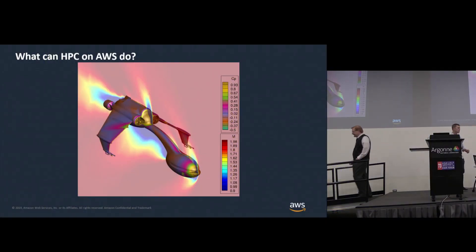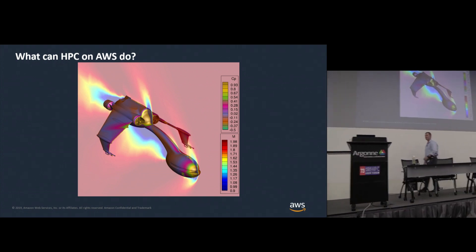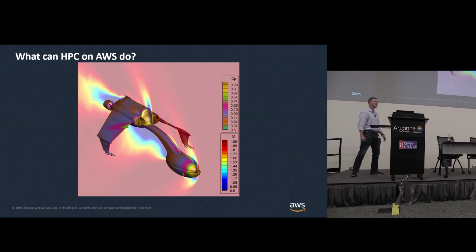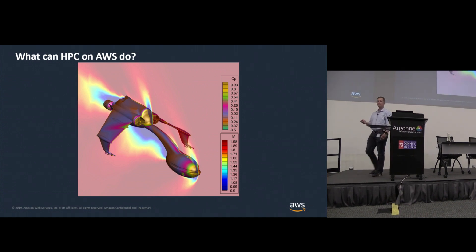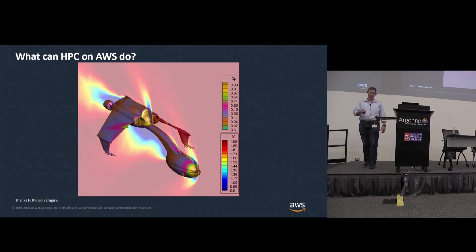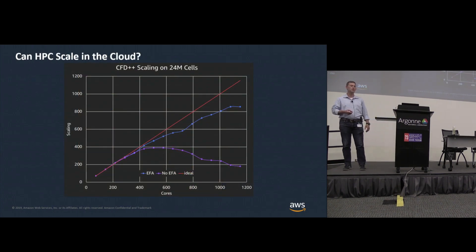Good morning! Who can tell me what this is and why you should care? It's a Klingon bird of prey — and why should you care? Because it's trying to kill you. But also because this is a really cool airflow model, and it was run on AWS: CFD++ with 24 million cells. Here's a graph showing you the performance results.